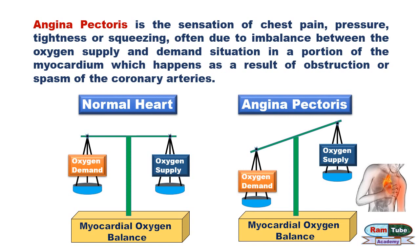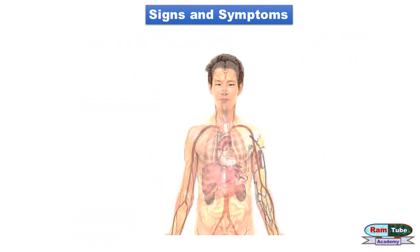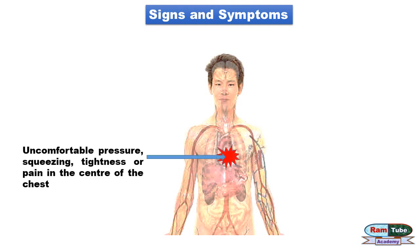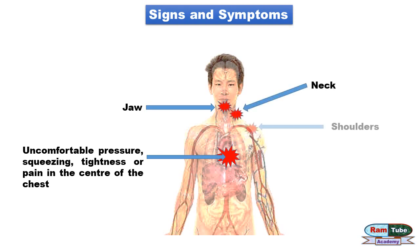Now first let's see what are the signs and symptoms of angina. If you have angina you may experience uncomfortable pressure, squeezing, tightness, or pain in the center of the chest, which may radiate towards the jaw, neck, shoulders, and into the arms.